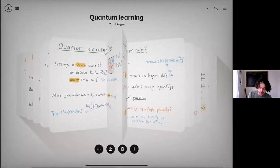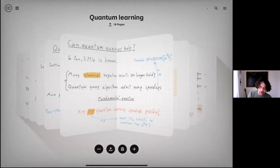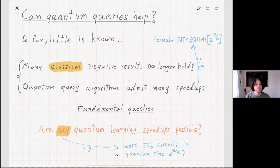Here comes the big question that we want to ask: can quantum queries really help us? The point is that so far, very little is known. We don't have any strong general results regarding the power of quantum learning algorithms in the setting of queries, and what we do know is that many of the classical negative results no longer hold. On the other hand, we have ample examples how quantum query algorithms can admit lots of speed-ups.